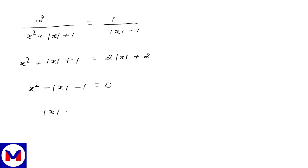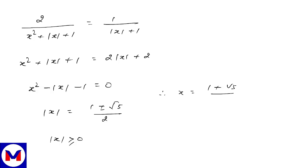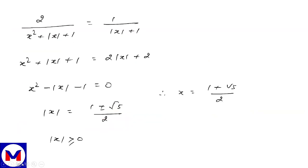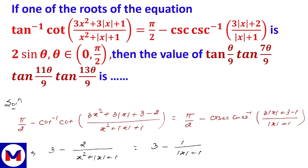The value of |x| = (−b ± √(b²−4ac)) / 2a = (1 ± √5) / 2. The root (1−√5)/2 is rejected because it is negative and |x| ≥ 0. Therefore the value of |x| is only (1+√5)/2. This is one of the roots of the equation, as stated in the problem.